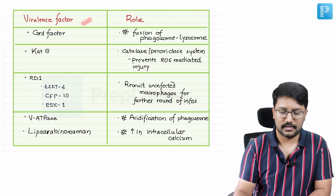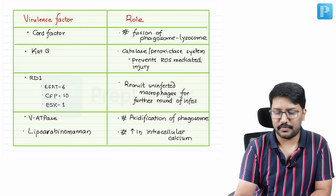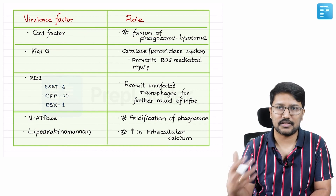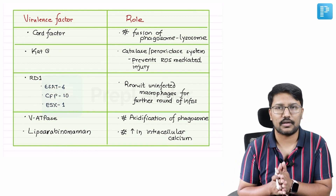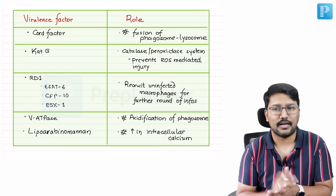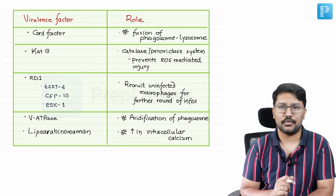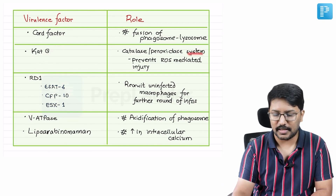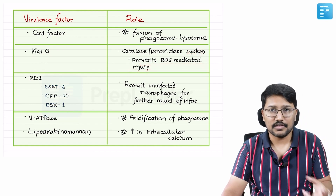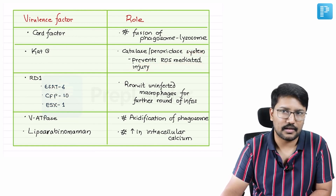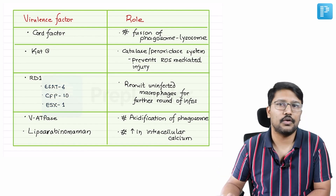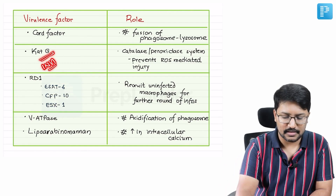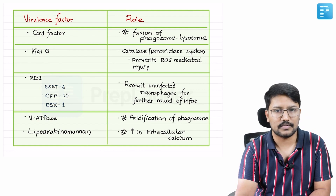A quick recap of the virulence factors: there is a factor called COD factor, which actually prevents fusion of the phagosome with the lysosome — one mechanism how tubercle bacilli evade destruction inside phagocytes, surviving as intracellular organisms. Then CAT-G, which codes for catalyzed peroxidase system, prevents the oxidative stress of the host cell from killing the mycobacteria, acting as a defense. CAT-G is also required for activation of INH, and certain mutations of CAT-G may be associated with INH resistance.